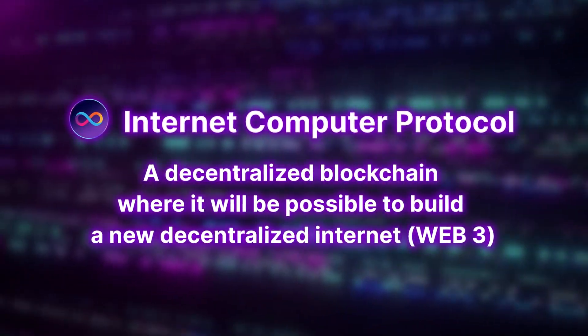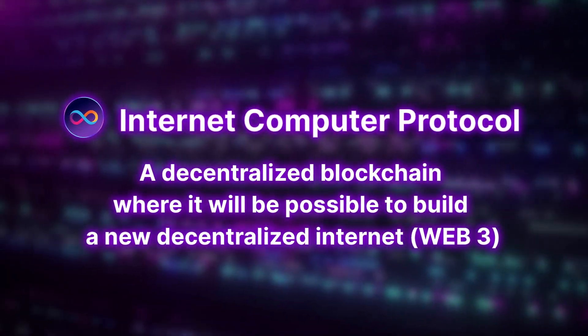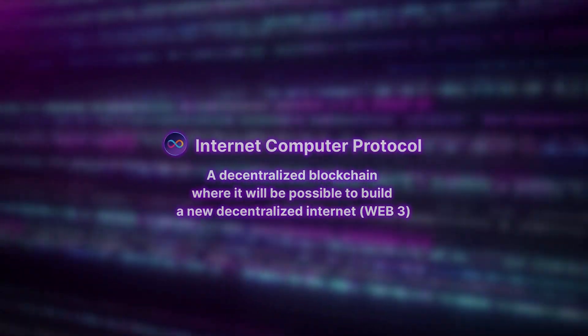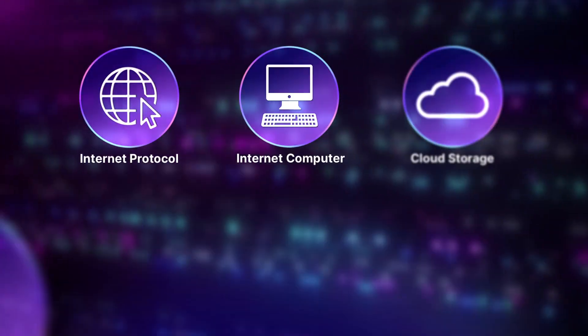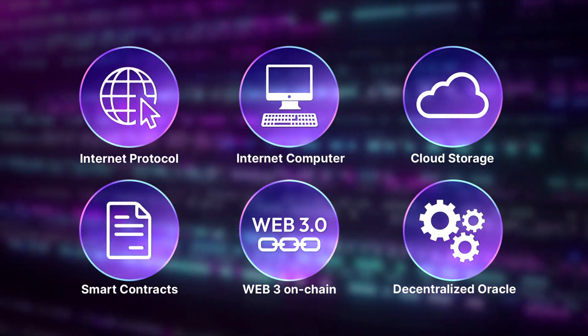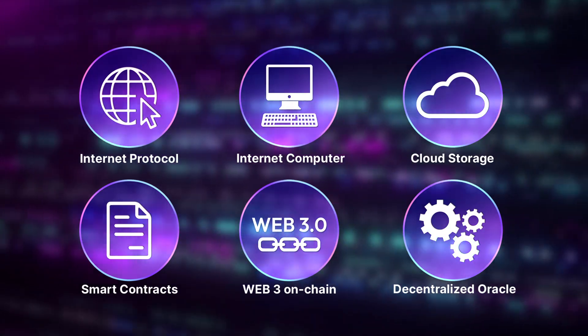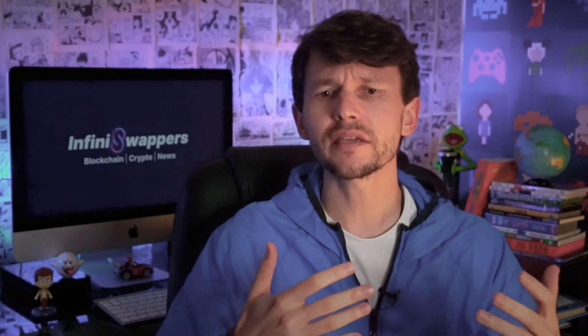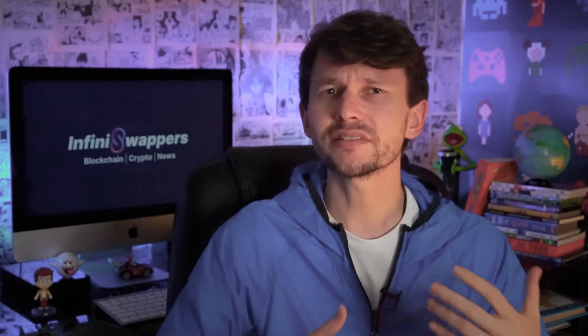ICP is an abbreviation for Internet Computer Protocol, a decentralized blockchain where it will be possible to build a new decentralized internet called Web3. ICP offers a new internet protocol, a computer inside the internet, a decentralized cloud storage, smart contracts, Web3 on-chain, and also a decentralized Oracle. But speaking like that, it seems like a very complex thing, and I feel that many people can't understand what ICP is because it's a project with technical complexity.